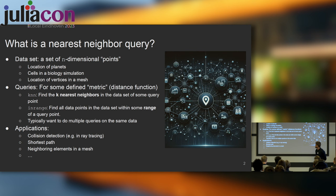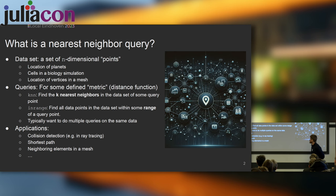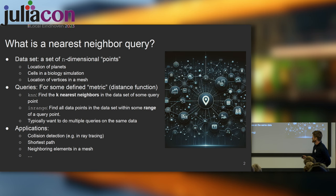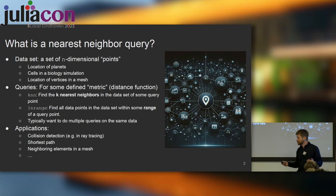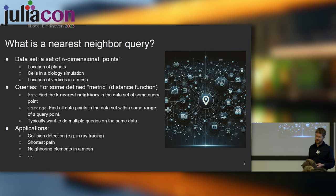So what is a nearest neighbor query? We start with some set of data like a point cloud — a set of n-dimensional points. It could be locations of planets, cells in biology simulations, or vertices in a mesh. Then we have queries we want to make using some defined metric, which is a distance function — typically the Euclidean distance, but there are other ways of computing distances.